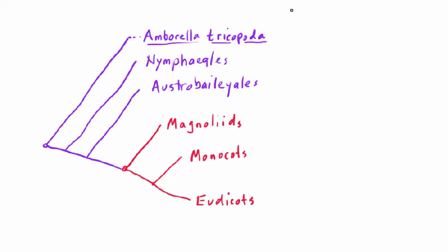I used a different word to describe the basal angiosperms: I call them an ANA grade. There's an operational difference between a grade and a clade that's fundamental for your general understanding of the organization of the tree of life, and I want to briefly explain the difference.